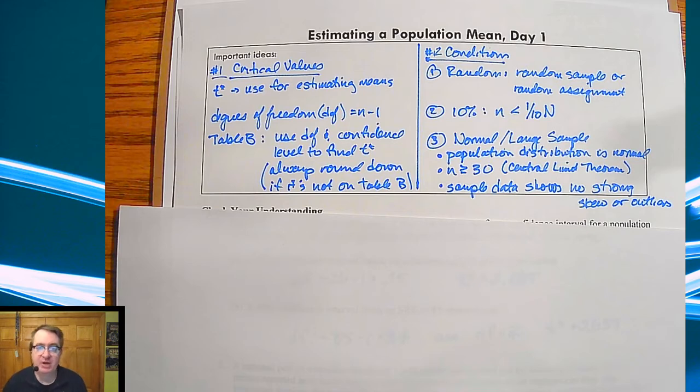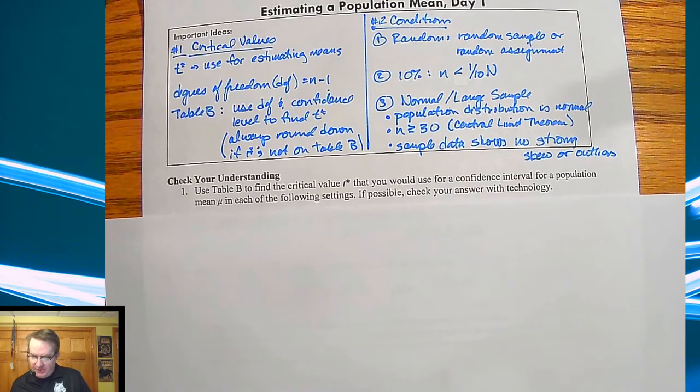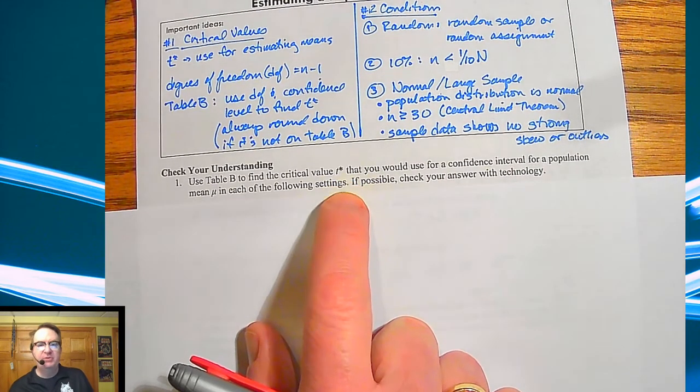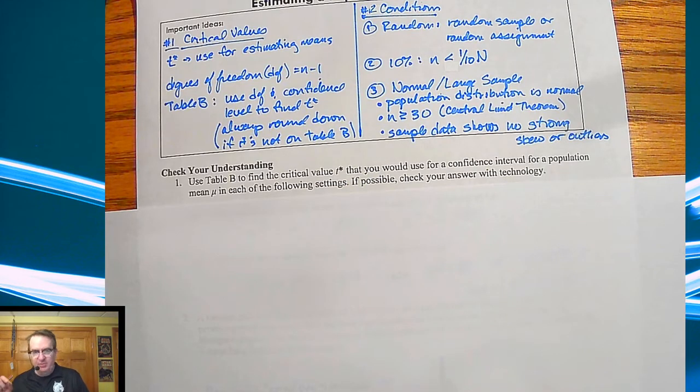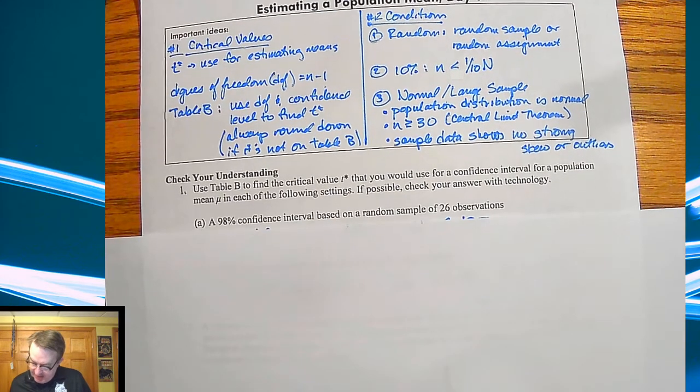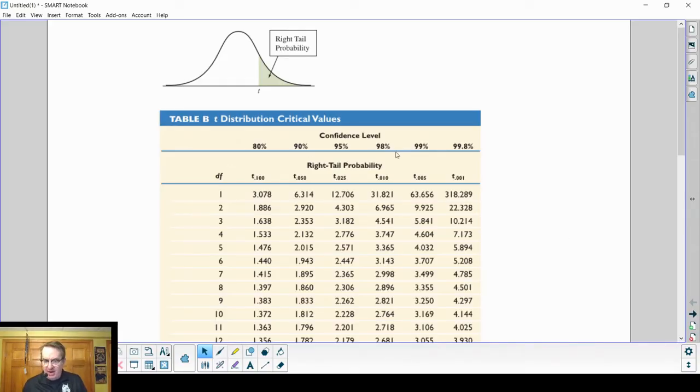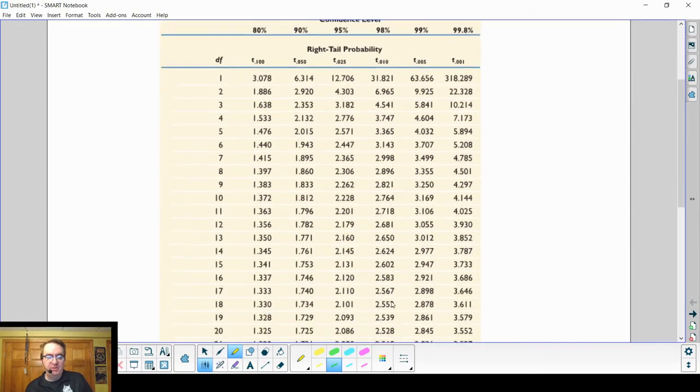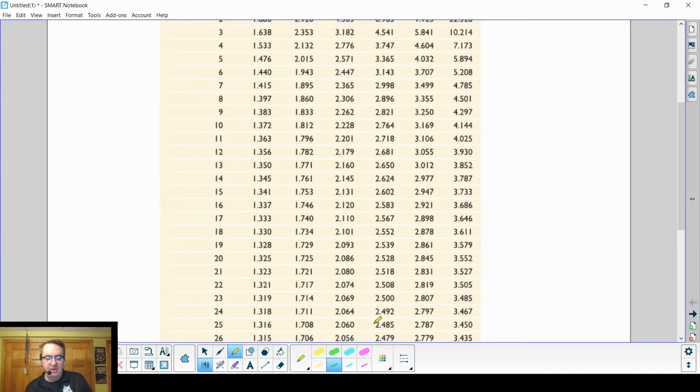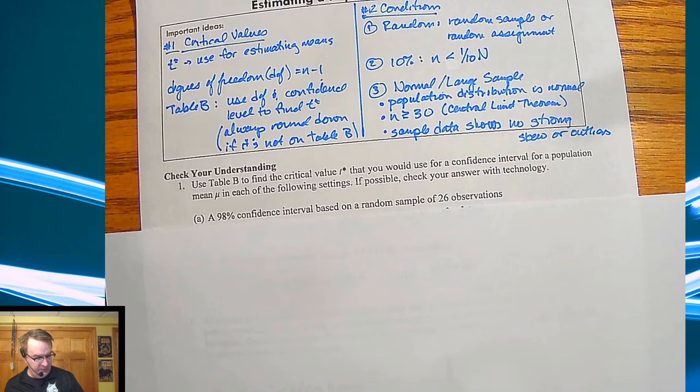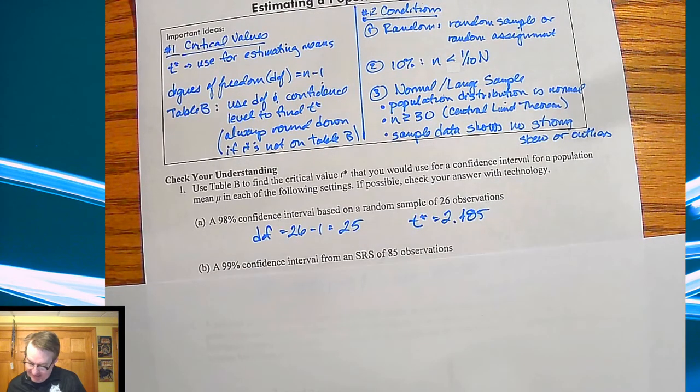Now for your check for understanding, we're going to work on some skill based things. I'm going to have you guys go through and find some t-scores, first on the table then we'll check it on the calculator. Hit pause for a second. The first one they ask you to find is 98% confidence interval with random sample of 26 observations. We know that for 98 percent we're going to be down in this column here. If we have 26 observations, that means we'll have degrees of freedom of 25, so you should come up with 2.45.